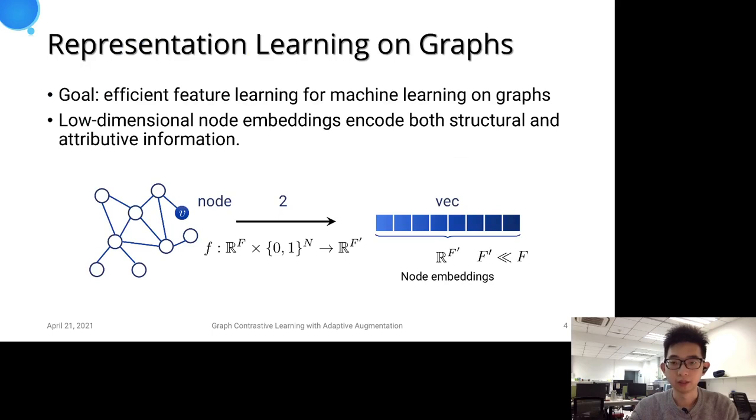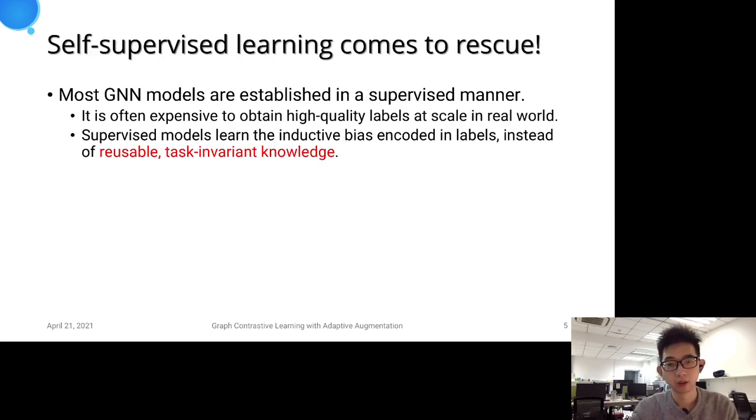Graph representation learning aims to learn a low-dimensional dense vector that encodes structures and node attributes, enabling infinite feature learning for graph structured data. Graph neural networks in recent years have become a defacto standard for learning graph representations.